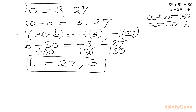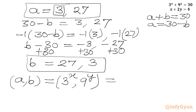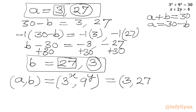So we have our a and b values ready. The ordered pairs (a, b) — where a = 3^x and b = 9^y — are (3, 27) and (27, 3).